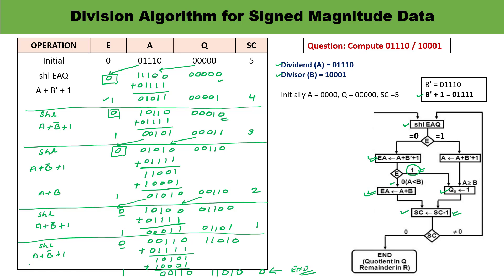The final result: the remainder is stored in A as 00110, and the quotient is stored in Q as 11010. The value of E is 1. This concludes the division algorithm numerical example. I hope it is now clear how to perform this operation and how the result is stored. Thank you for watching.